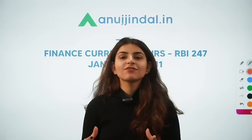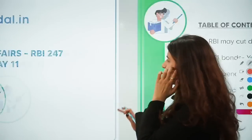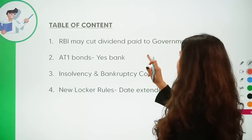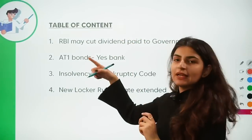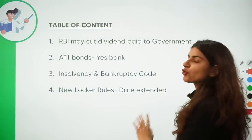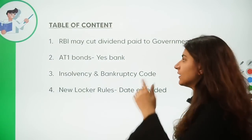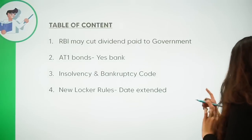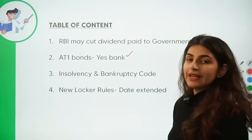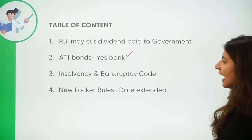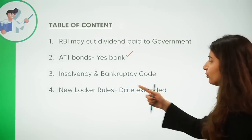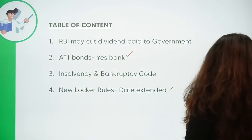Hi everyone, welcome back to another session of RBI 247, wherein we discuss finance current affairs which are relevant for RBI and SEBI Grade A exam. Today we have four topics: RBI may cut dividend paid to the government; AT1 bonds and Yes Bank news; Insolvency and Bankruptcy Code; and the new locker rules with their extended implementation deadline.